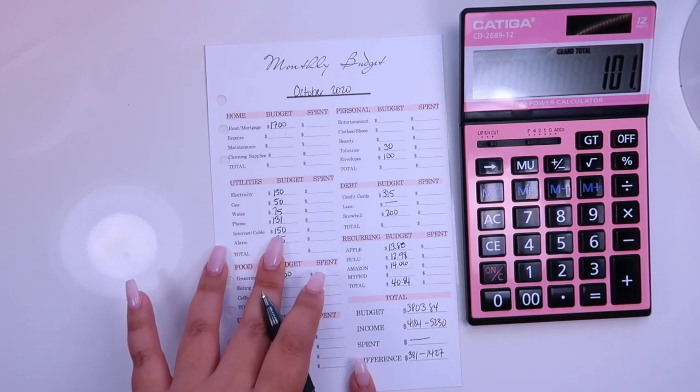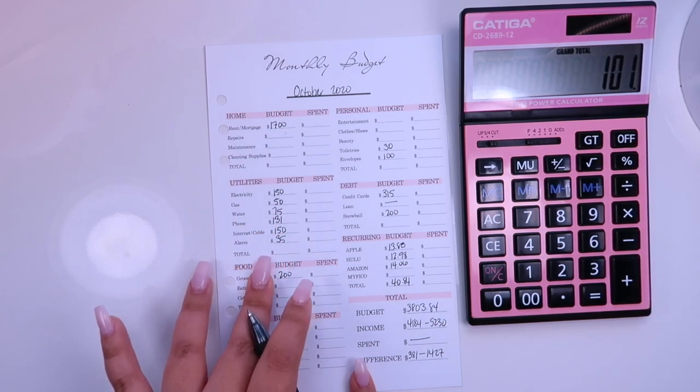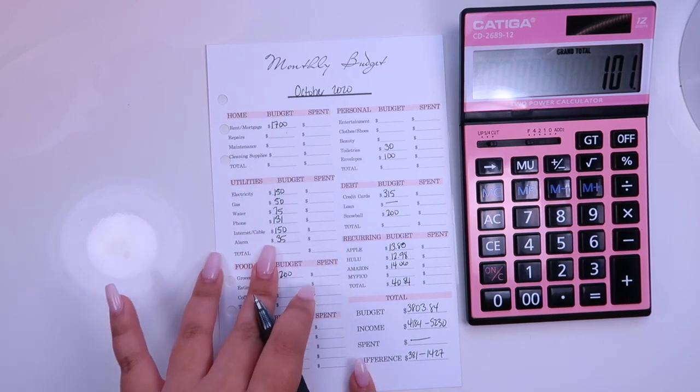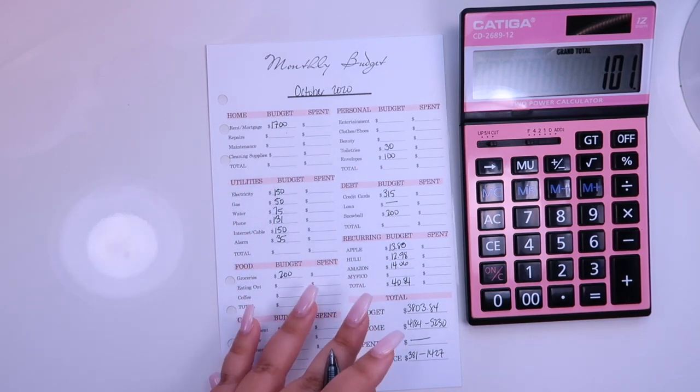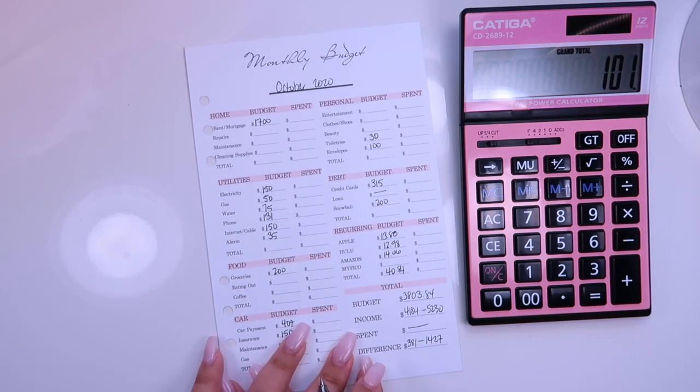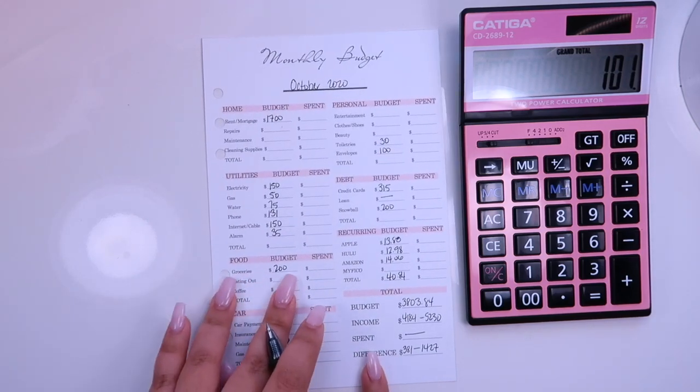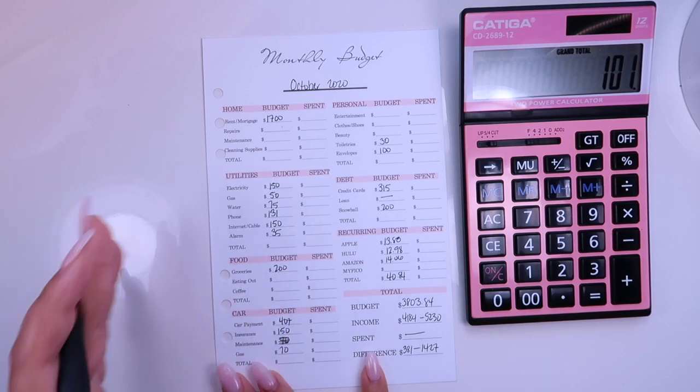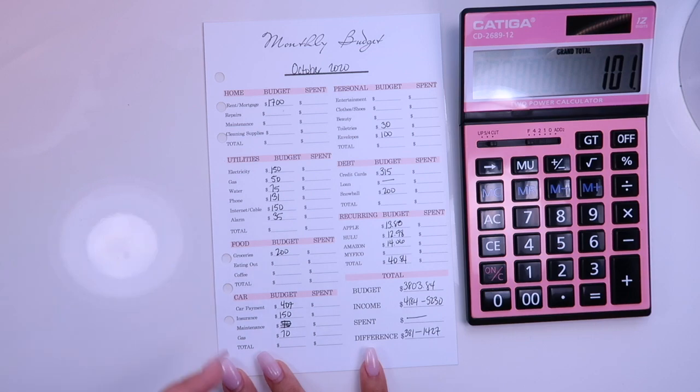So electricity, gas, water, obviously my phone, internet, cable, and alarm. I will have an alarm system as well. And all of this is just an estimate. It can be higher. It can be lower. But I think it will balance itself out. My groceries, I still want to do $200. It can be more, it can be less. But obviously, I'm going to eat the same.